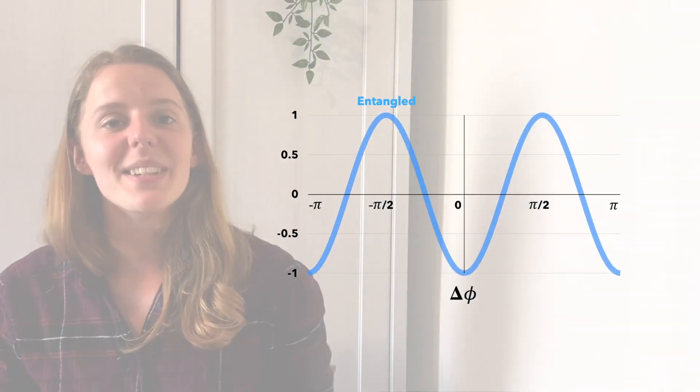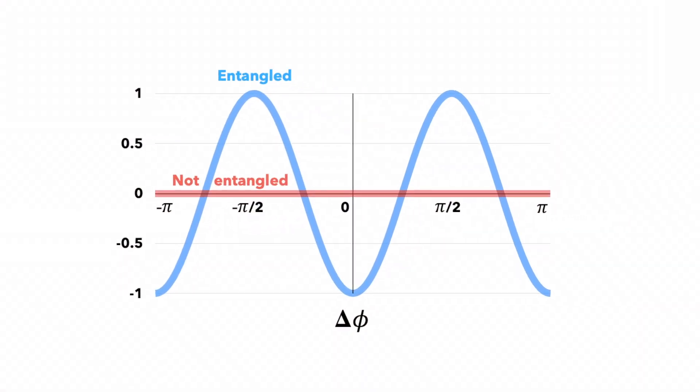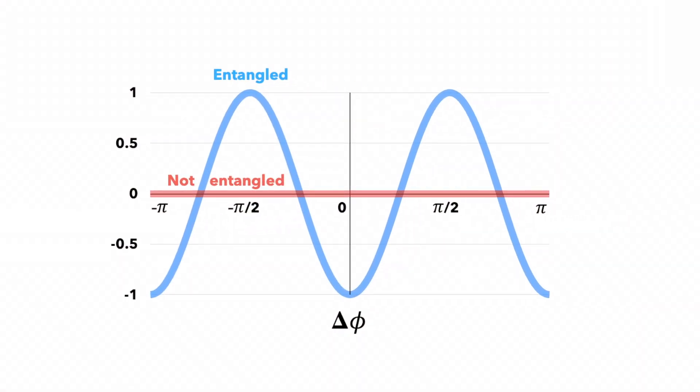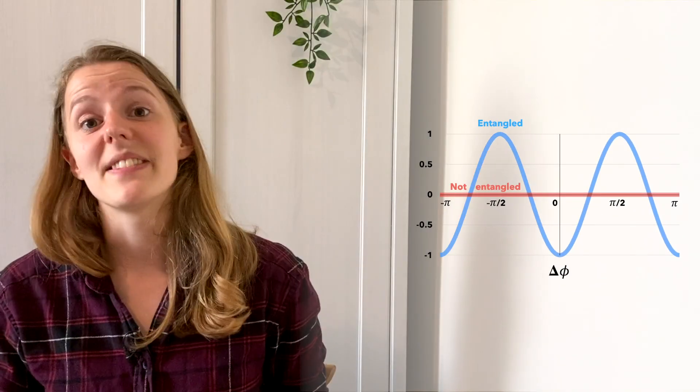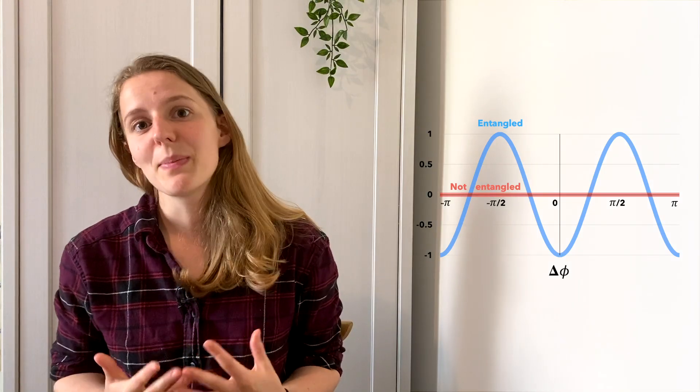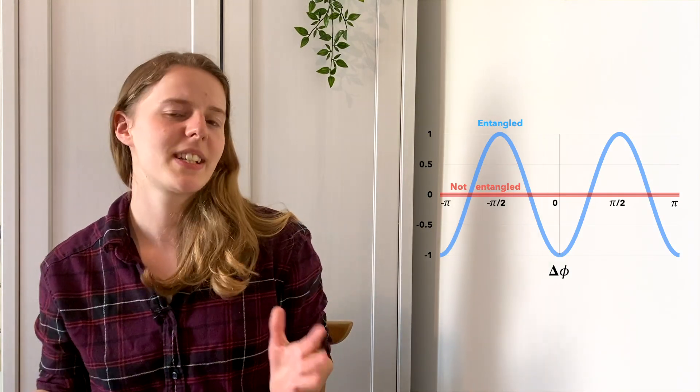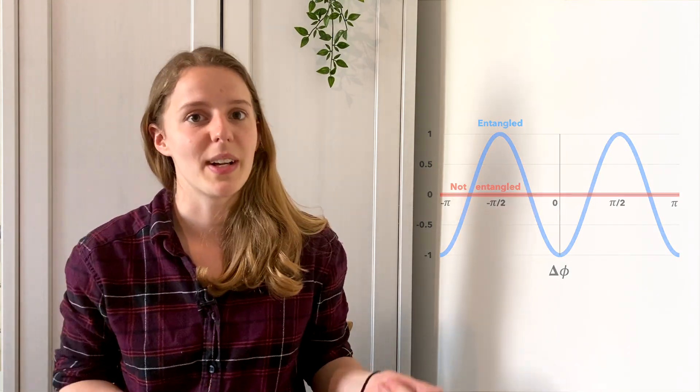But, if the photons are not entangled, then there's no relationship at all between the angles. The photons are equally likely to scatter at any angle, so delta phi is flat. So, we should be able to use this information to work out which of the detected photons we should use for our image.